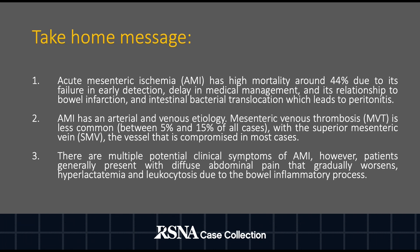The take-home messages are: acute mesenteric ischemia has a high mortality around 44% due to failure in early detection, delayed medical management, and its relationship to bowel infarction and intestinal bacterial translocation leading to peritonitis. AMI has both arterial and venous etiology. Mesenteric venous thrombosis is less common, with the superior mesenteric vein being the vessel most commonly compromised.